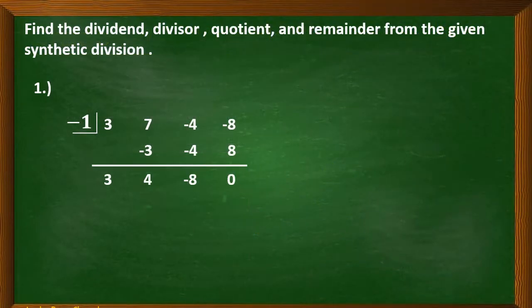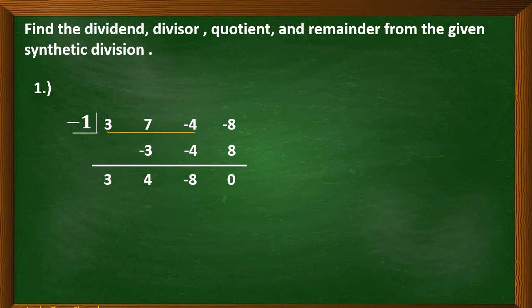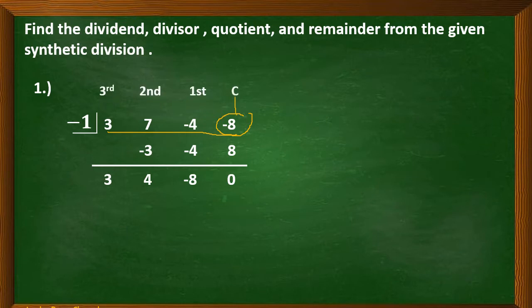Now we will consider the first example. Find the dividend, divisor, quotient, and remainder from the given synthetic division. This is our given. The first row in the upper part corresponds to the dividend. How will we know the respective term in the dividend? The last number, negative 8, corresponds to the constant term.